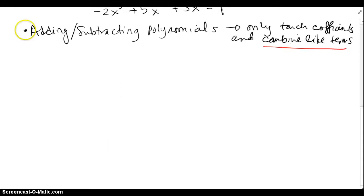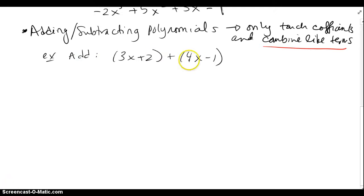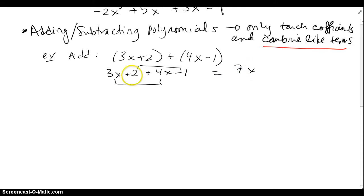Next we want to look at adding and subtracting polynomials. The only thing we do is touch the coefficients — not the variables and their exponents — and we combine like terms. For example, adding two binomials: I can remove the parentheses since I'm only adding, and combine like terms. 3x and 4x gives me 7x, and 2 and negative 1 give me positive 1.